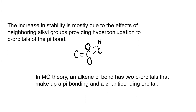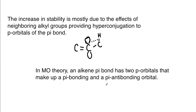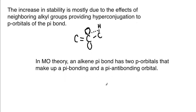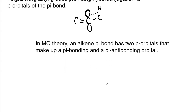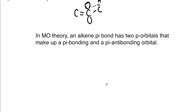In molecular orbital theory, an alkene pi bond has two p orbitals that make up a pi bonding orbital, and you also have a pi antibonding orbital. In this case, the two pi electrons fill the pi bonding orbital first, and then the antibonding orbital, which we normally represent with a star or asterisk next to the pi symbol.